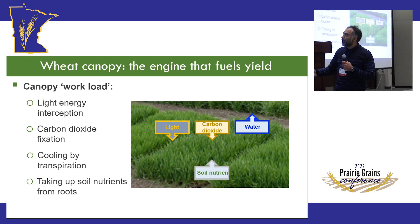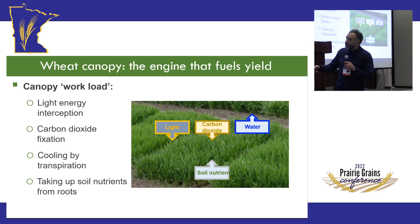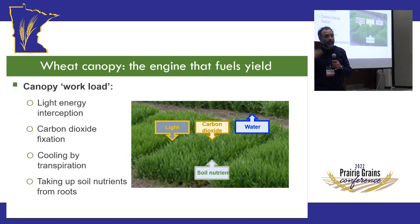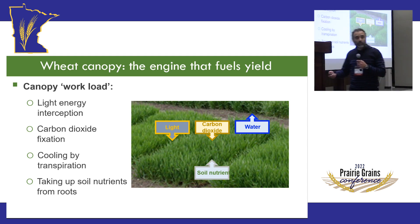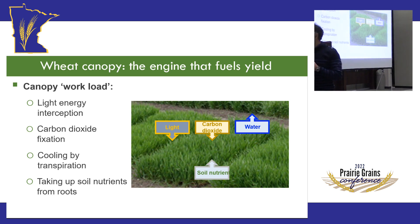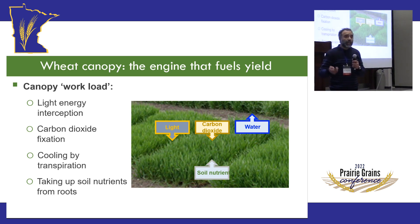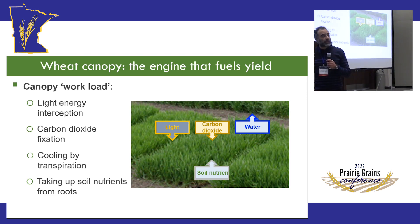By generating tension in the water column during transpiration, the canopy also moves important nutrients from the soil into the plant — particularly mobile nutrients like nitrogen. So canopy is doing a lot of work; it's the engine that fuels yield.